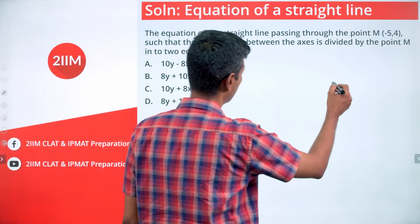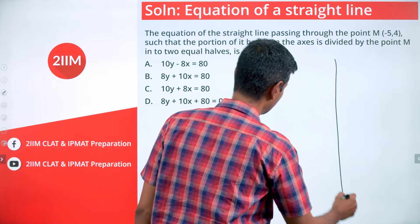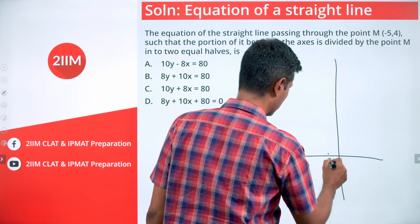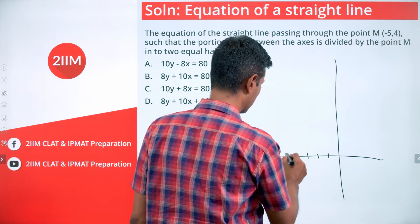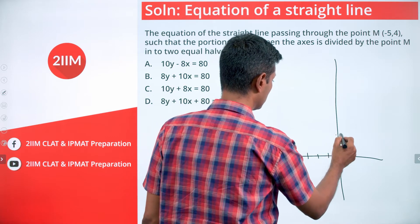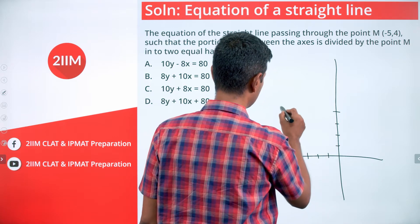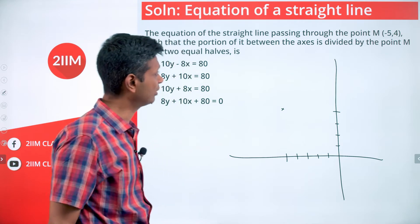The straight line passing through the point (-5, 4). I'm going to draw the axis like this: -1, -2, -3, -4, -5, 1, 2, 3, 4. So the line passing through this (-5, 4).